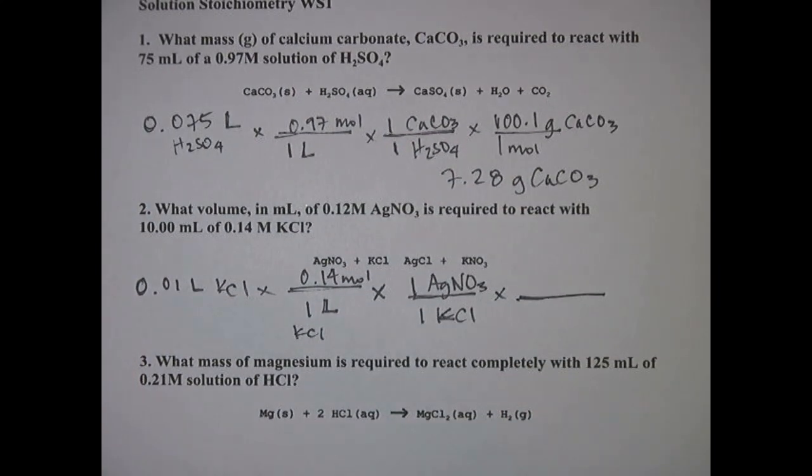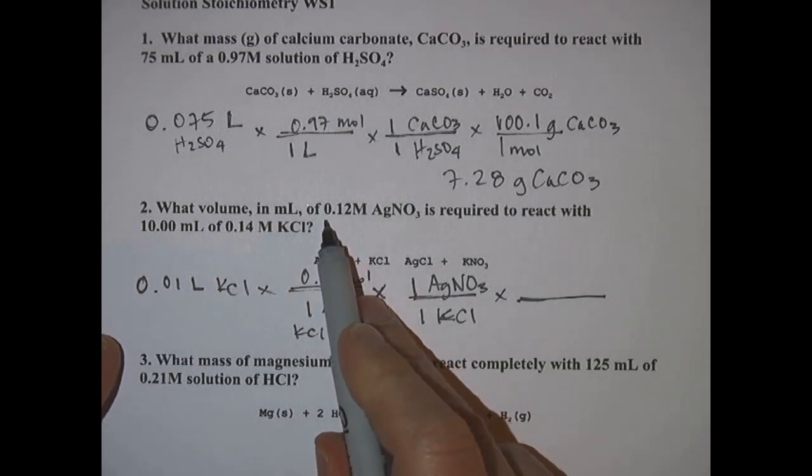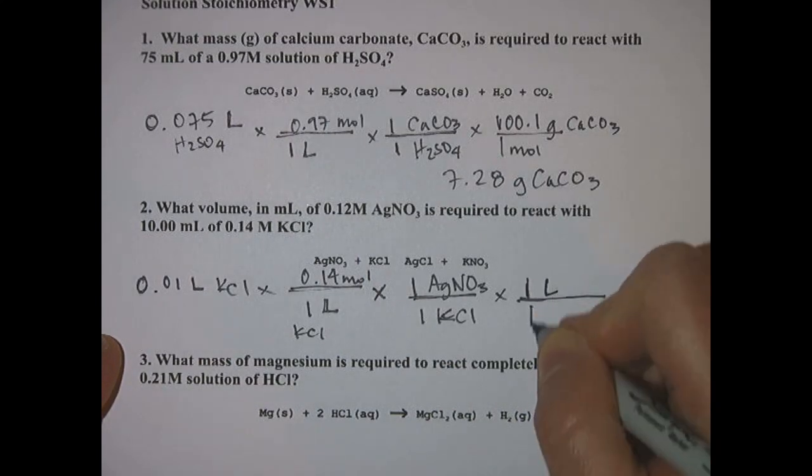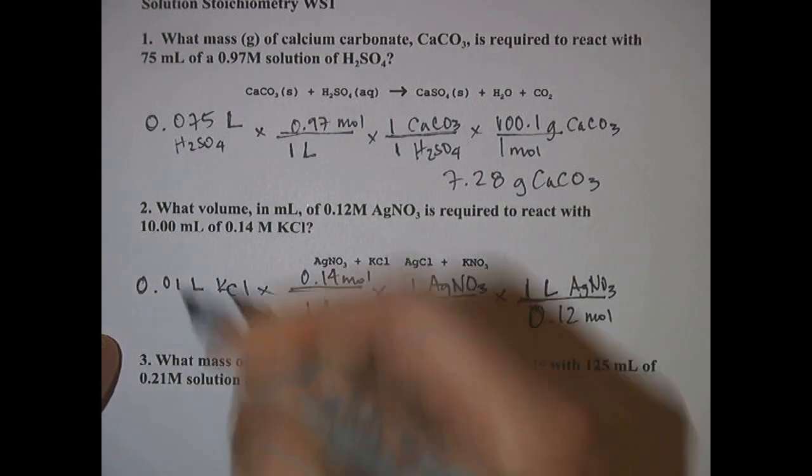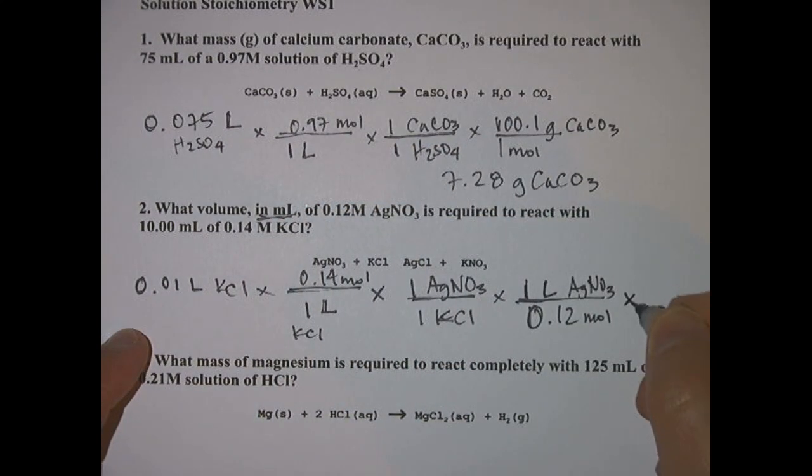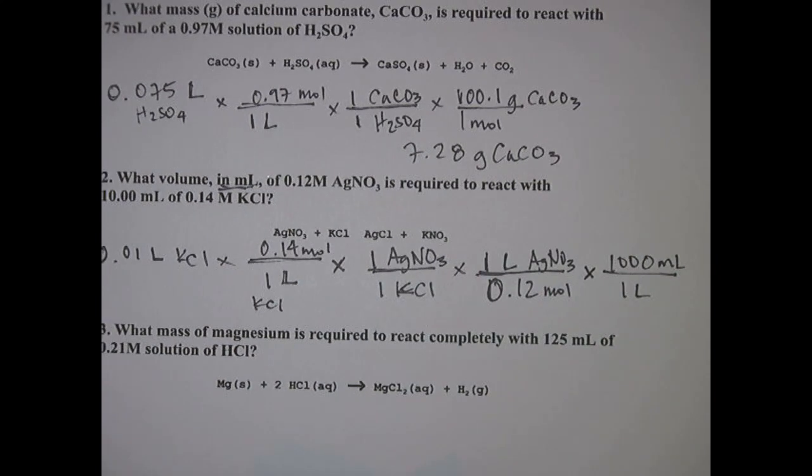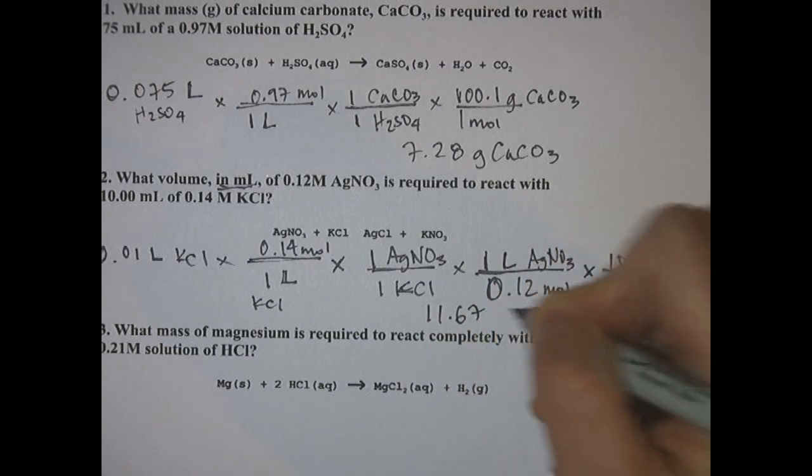If we want our answer in grams we use molar mass, but we want our answer in milliliters because this is a solution, so that's where the 0.12 molar comes in. One liter is 0.12 moles of AgNO3. This problem you want your answer in milliliters, so you could stop here or I like to just tack this last one on: in one liter of anything is equal to a thousand milliliters. If you do the math here 0.01 times 0.14 divided by 0.12 times a thousand I ended up with 11.67 milliliters.